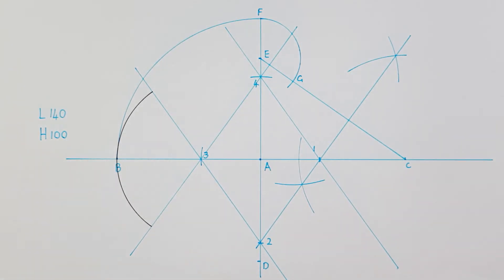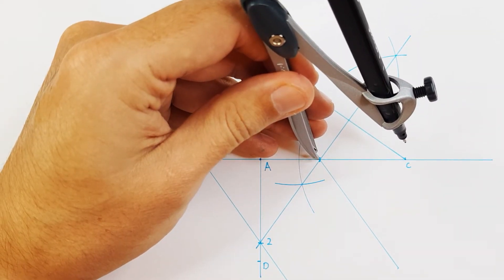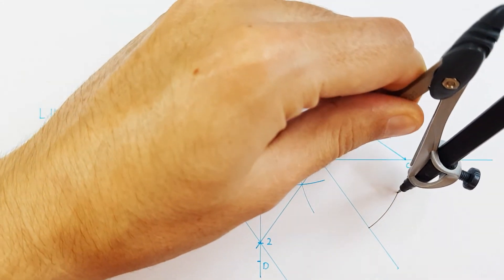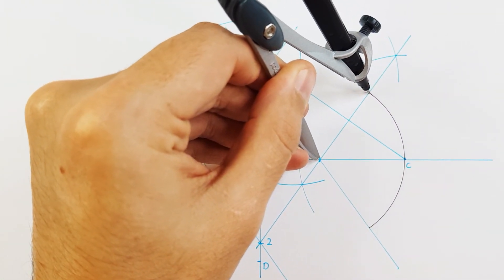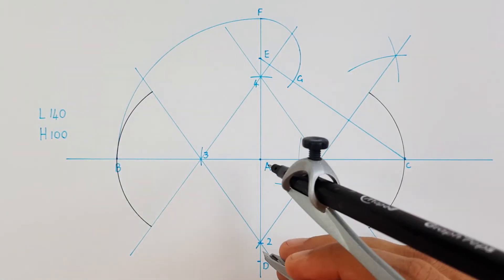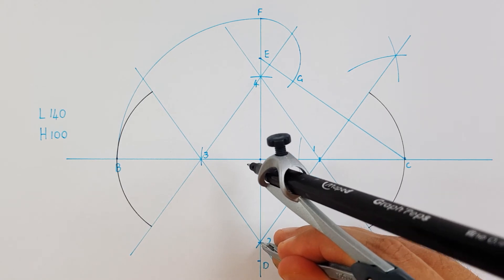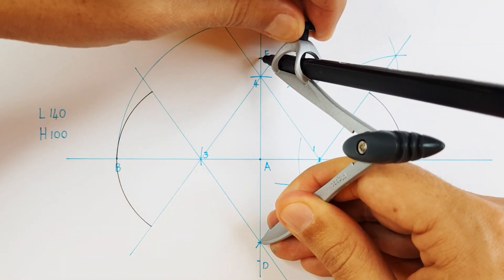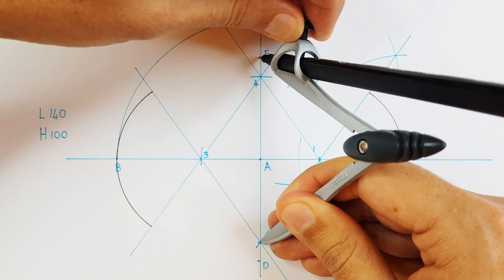I will place my compass on point 2 and adjust it all the way to point E. This measurement will be used to draw the top and bottom part of my ellipse.